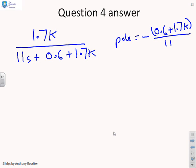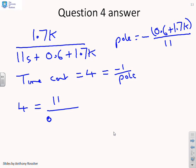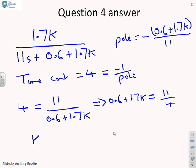And the next question is, it said, we want the time constant equal to 4. And you remember, this is minus 1 over the pole. So what we're saying is 4 equals 11 over 0.6 plus 1.7 times k. Alternatively, this implies 0.6 plus 1.7k equals 11 over 4. Or finally, I can rearrange this to give you that k equals 11 over 4 minus 0.6, all divided by 1.7. So if I put in that answer, then I should get a required time constant of 4. So let's go to MATLAB and just try it.